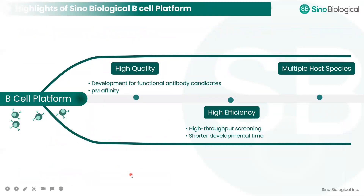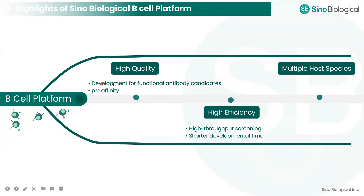In summary, Sinobiological has set up a single B cell platform to support antibody discovery. This platform helps obtain high-quality, functionally active antibodies, including therapeutic drug targets and viral antigens. Most antibodies obtained have picomolar or nanomolar-to-picomolar affinity. The procedure offers high efficiency through high-throughput screening, and development time is much shorter than other platforms. Currently, Sinobiological is able to use this B cell platform to obtain antibodies from mice, rabbits, and human cells.